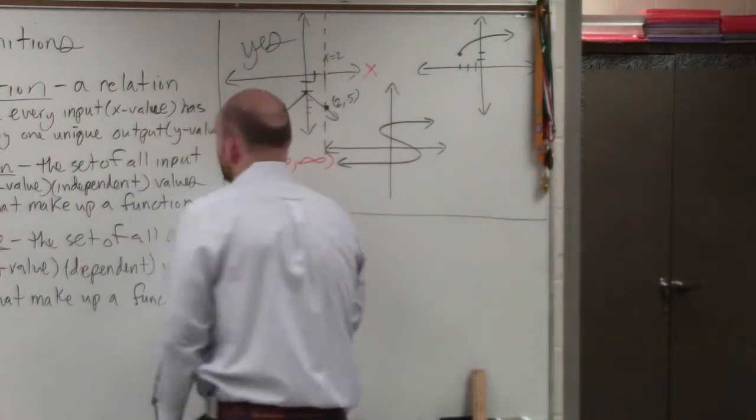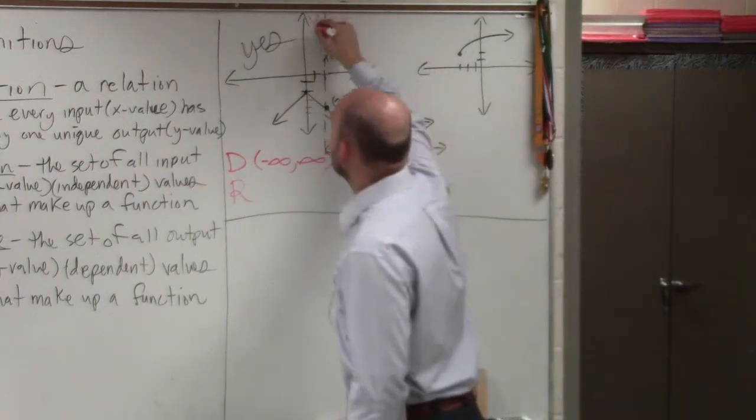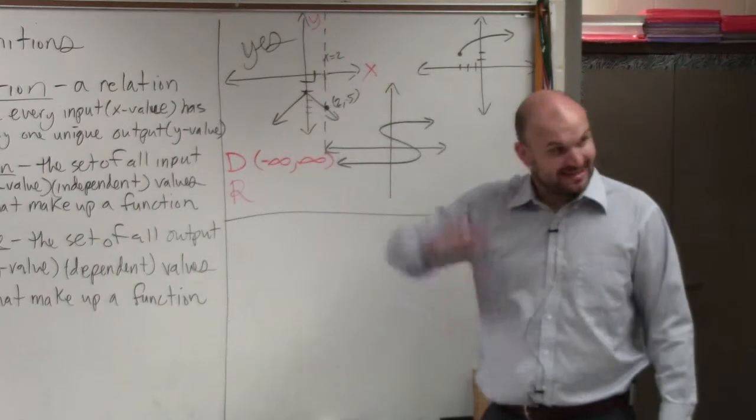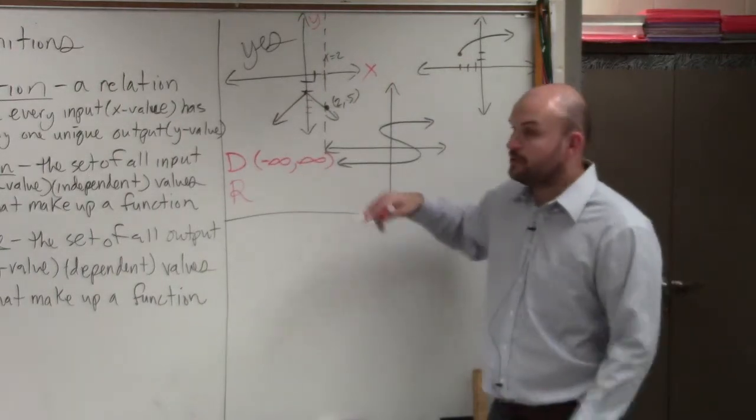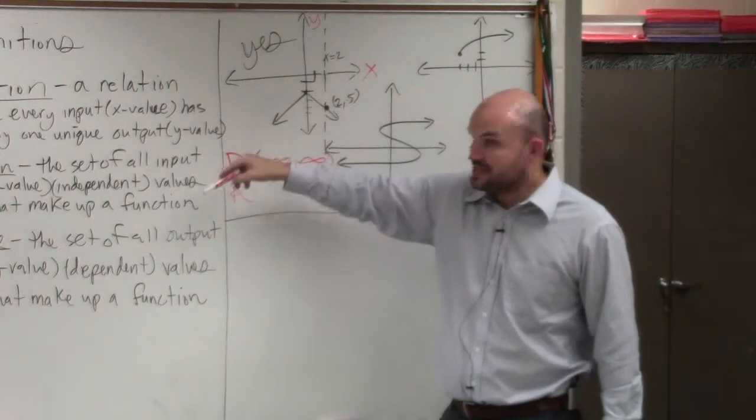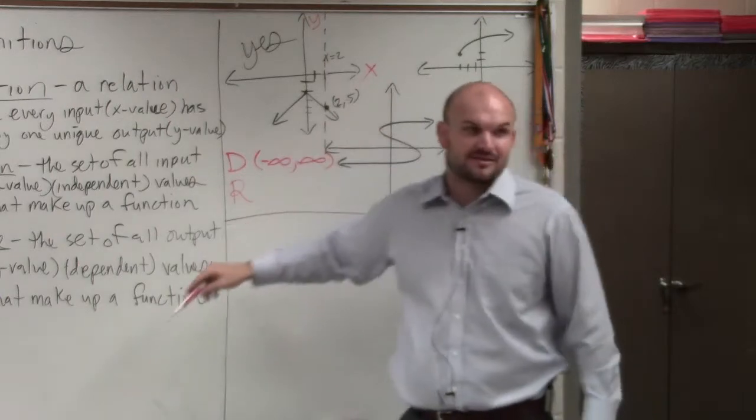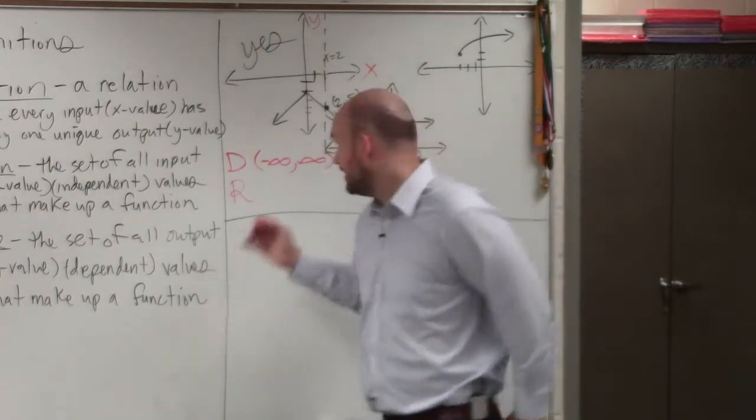Then we talk about the range. Range is the set of all y values. Think y-axis. Think up and down with the range. So we always start with the lower value. Think of the negative. So how far as this graph is going to the left, it's also going down. As it's going to the right, it's also going down. So how far down is this graph going to go?